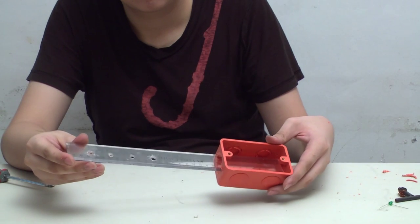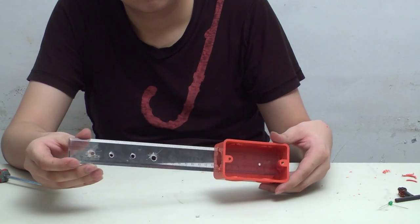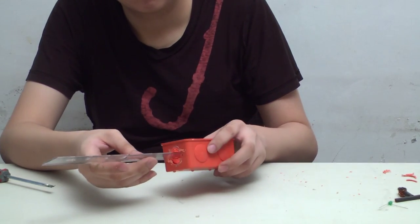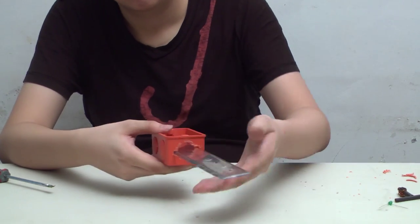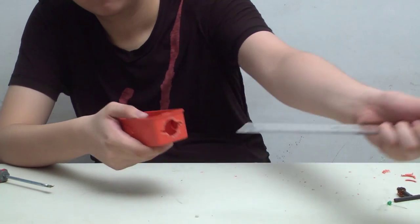I drilled in a few more holes on the ruler so I can put on more LED lights. And then I made a few adjustments on the electrical box. That way I can put in the ruler.